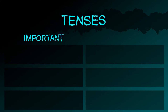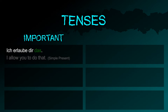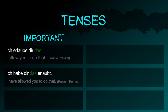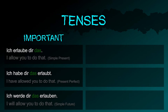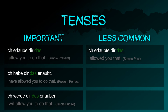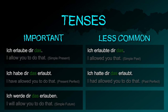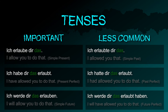Important tenses: ich erlaube dir das (present), ich habe dir das erlaubt (perfect), ich werde dir das erlauben (future). Less common tenses: ich erlaubte dir das (simple past), ich hatte dir das erlaubt (past perfect), ich werde dir das erlaubt haben (future perfect).